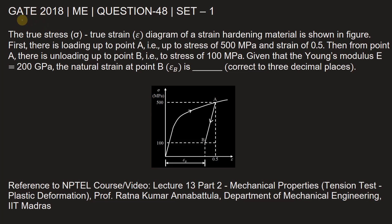Hello Aspirant, this question is from GATE 2018 Mechanical Engineering paper Set 1, question number 48. The true stress (σ) - true strain (ε) diagram of a strain hardening material is shown in the figure. First, there is loading up to point A, that is, up to stress of 500 MPa and strain of 0.5.